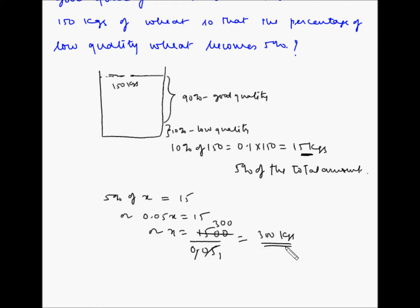So the total quantity of wheat should be 300 kgs. Now we already have 150 kgs of wheat. So the amount of good quality wheat that we need to add will be 300 minus 150 which is equal to 150 kgs of good quality wheat needs to be added.